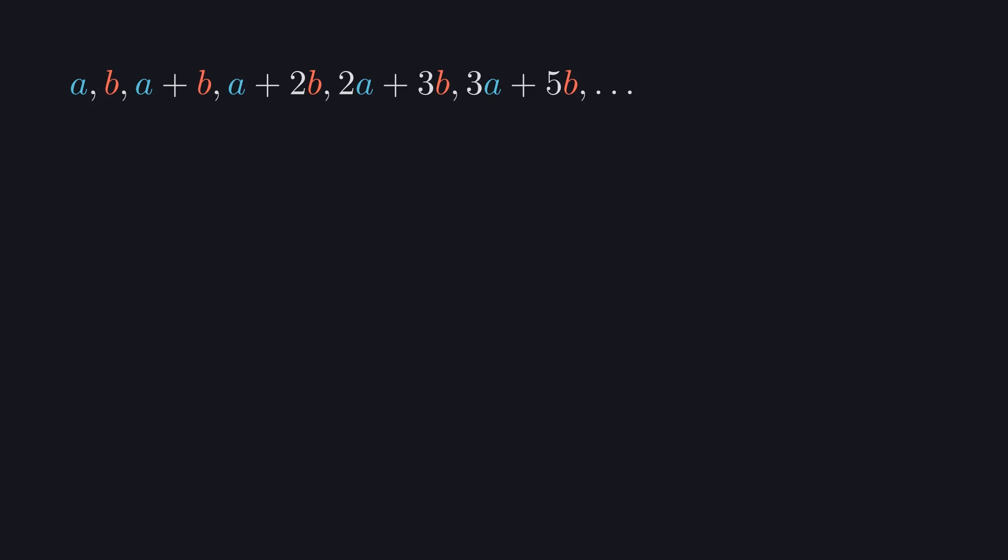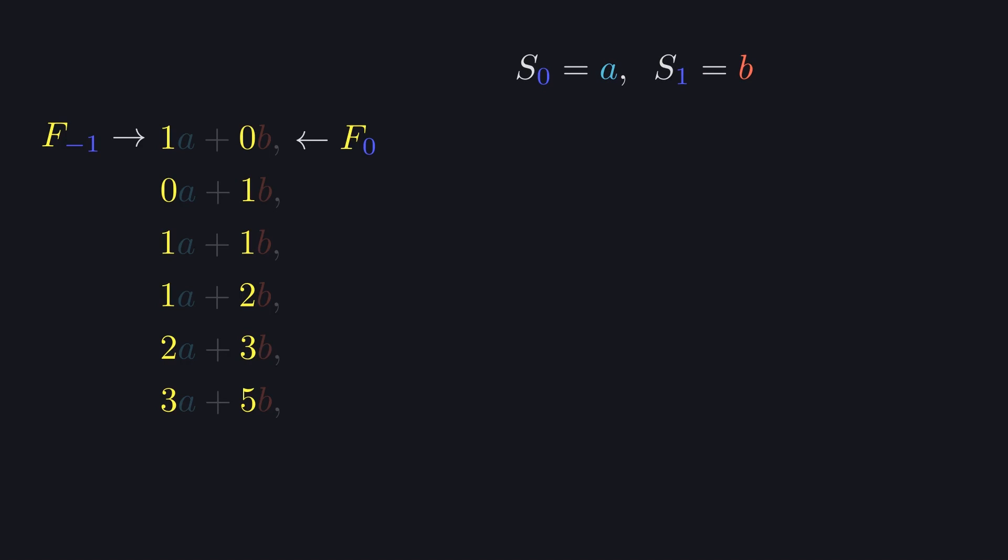Doesn't this look familiar? Let's make it more visible by writing out the factors of A and B even when they are 1 or 0. We start with 1 of A and 0 of B, then 0 of A and 1 of B, and the rest follows pretty much the same. Now we can arrange them vertically and focus on the factors, which are pretty obviously Fibonacci numbers. The factors of B start off like the regular Fibonacci sequence, and the factors of A lag one element behind. That lets us generalize the nth element of a sequence that starts with A and B, as the nth Fibonacci number of B and n-1st Fibonacci number of A.